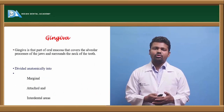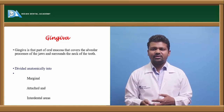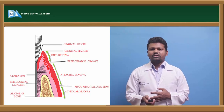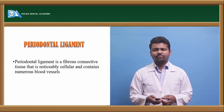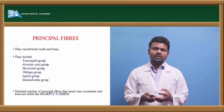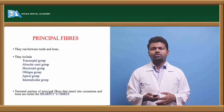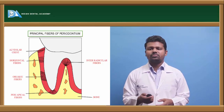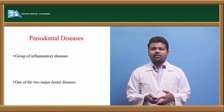Gingiva is that part of oral mucosa which surrounds the teeth in a collar-like form, divided into marginal, attached, and interdental gingiva. Periodontal ligaments are fibrous connective tissues that are notably cellular and contain numerous blood vessels. They give attachment to the tooth in the tooth socket. The fiber types include transeptal, horizontal, vertical, oblique, and interradicular fibers. Terminal portions of principal fibers that insert into the cementum are called Sharpey's fibers.